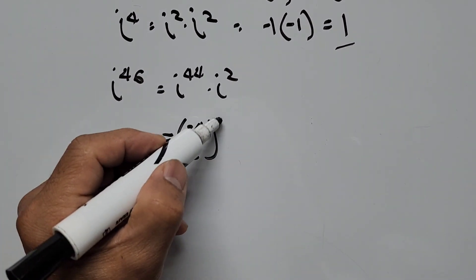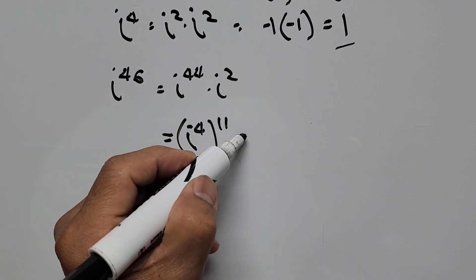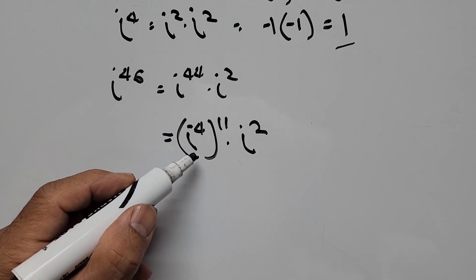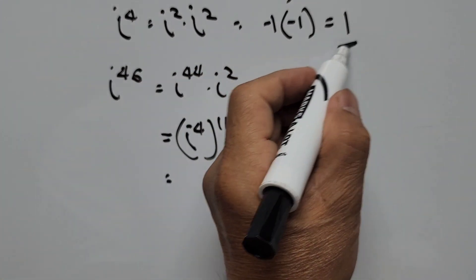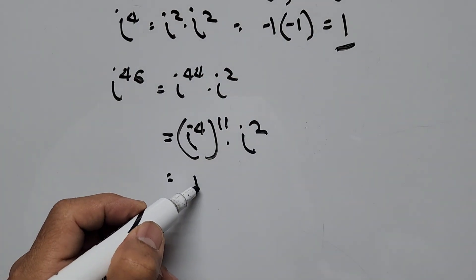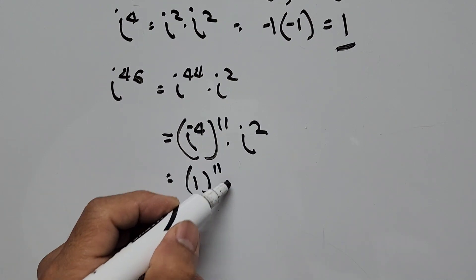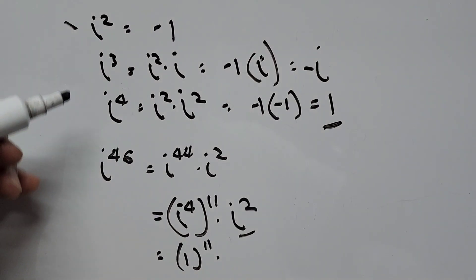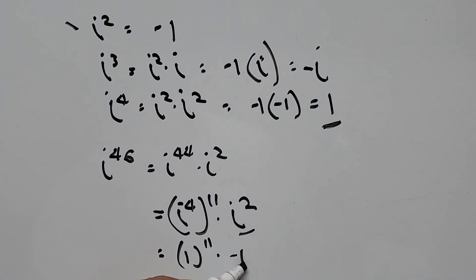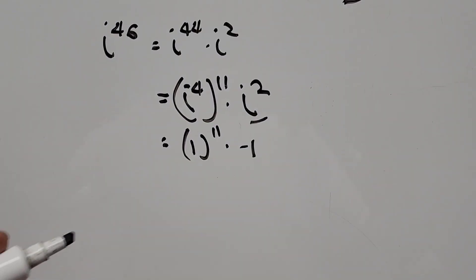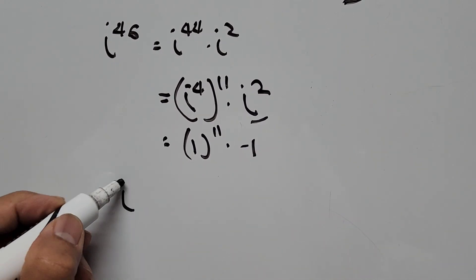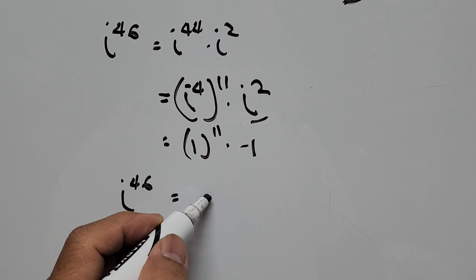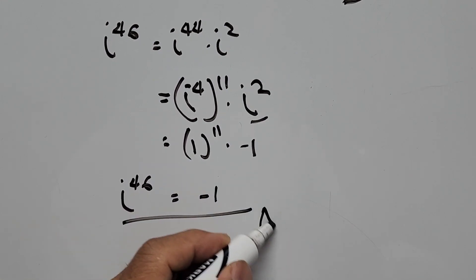And here i raised to the 4 power is 1, so we have 1 to the power of 11 times i squared, where i squared is negative 1. And so therefore i to the 46 power is equal to 1 times negative 1, this is negative 1, final answer.